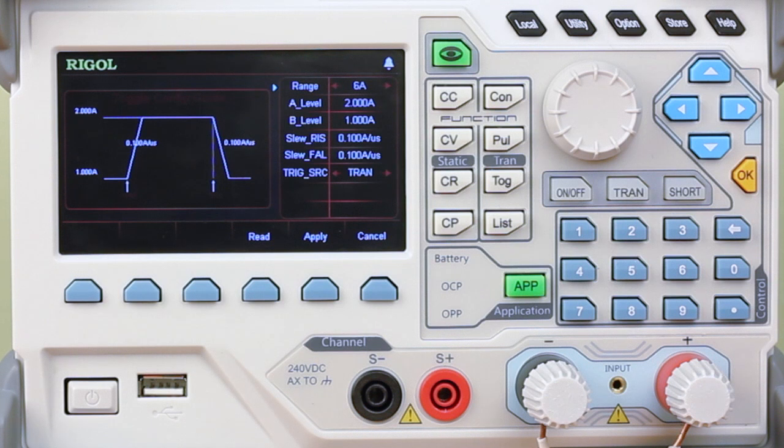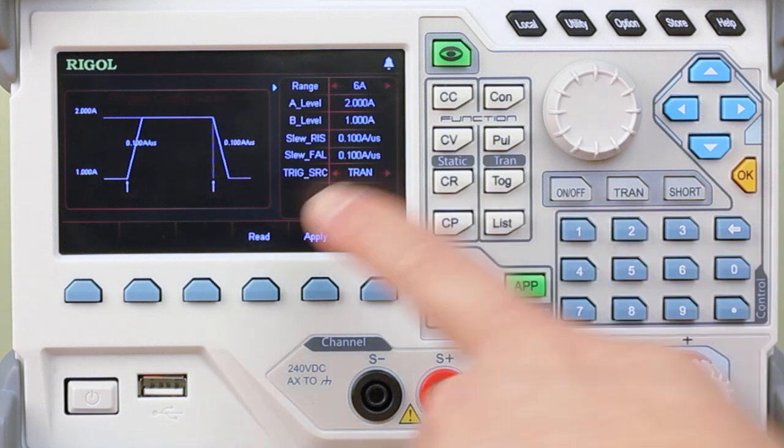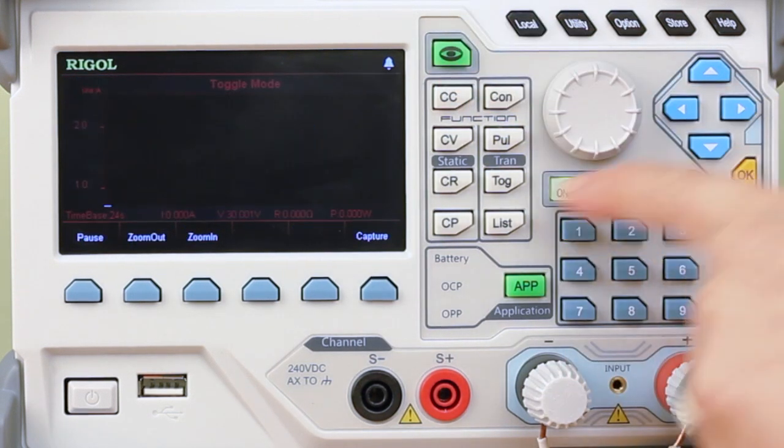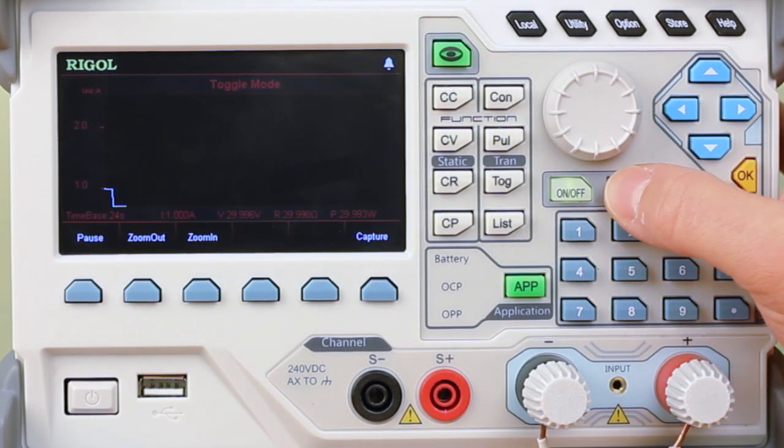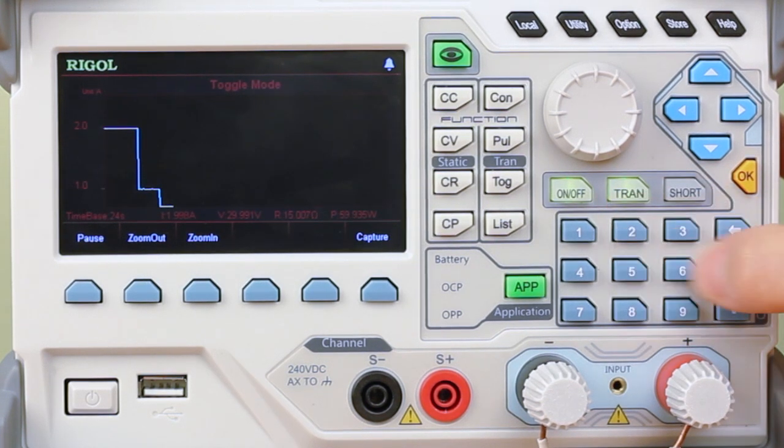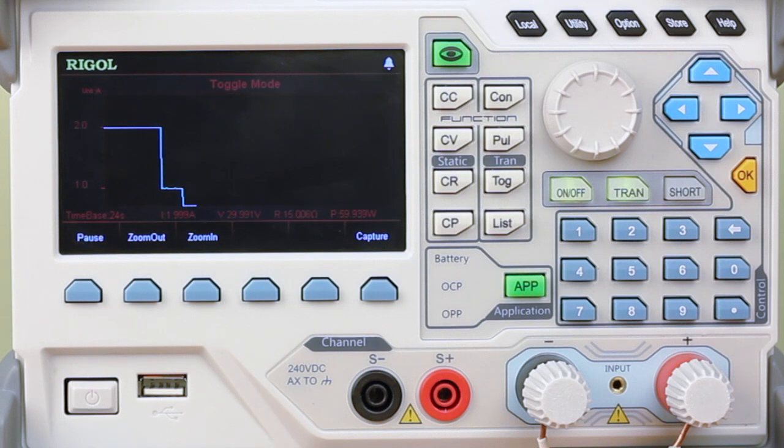The third way to do this is called toggle. Toggle mode, again with the same settings. Let's see how this operates. Once we turn this on, we see that it holds level until I hit the trigger button again.